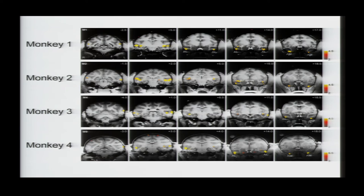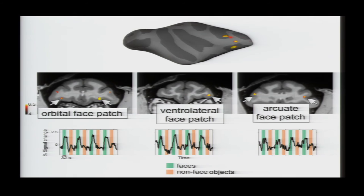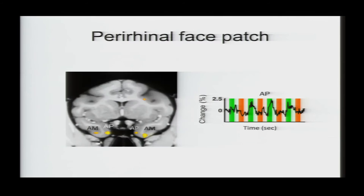And recently, we also found three patches of face-selective cortex in the frontal lobe, so in orbital frontal cortex, in ventrolateral prefrontal cortex, and in the lower bank of the arcuate, suggesting that the system extends into the frontal lobe. And also, very recently, we found in a few animals a face-selective patch in perirhinal cortex that could be important for coding face memories.